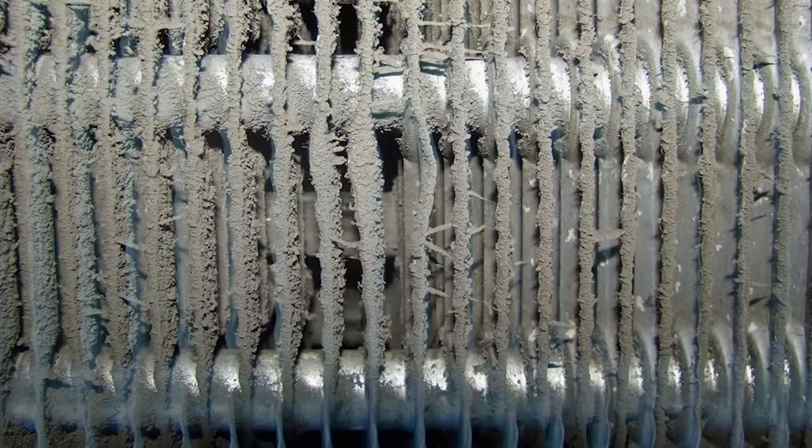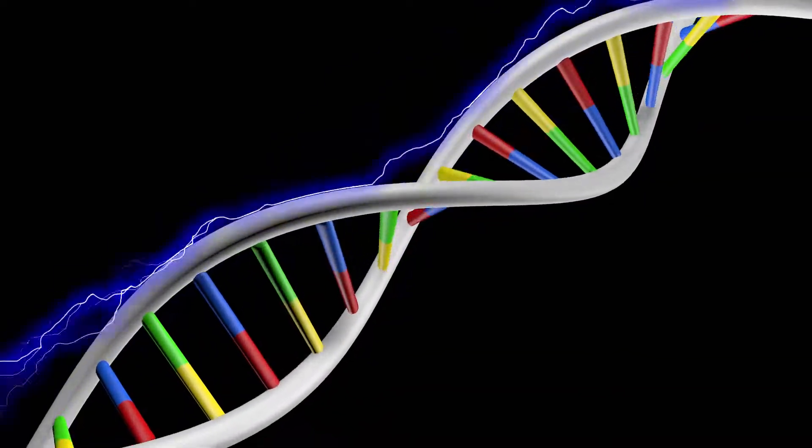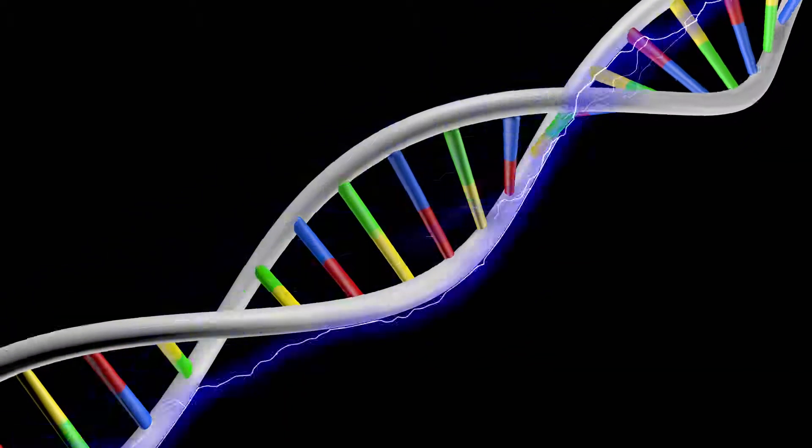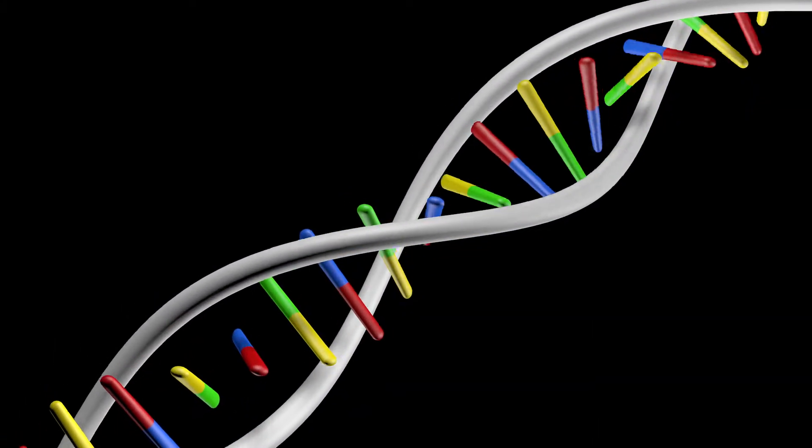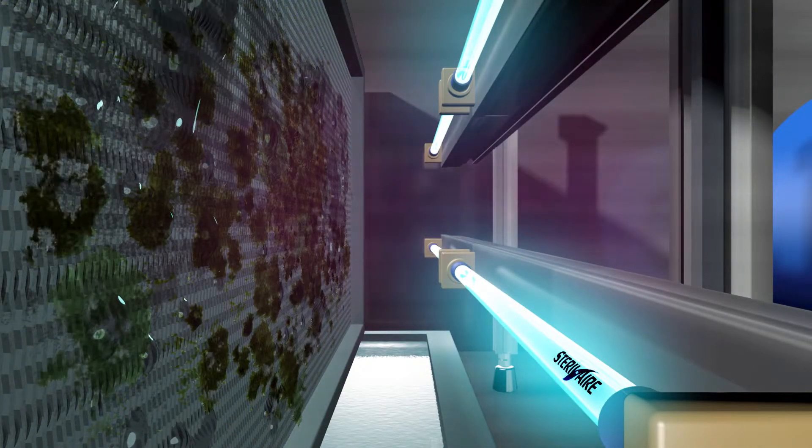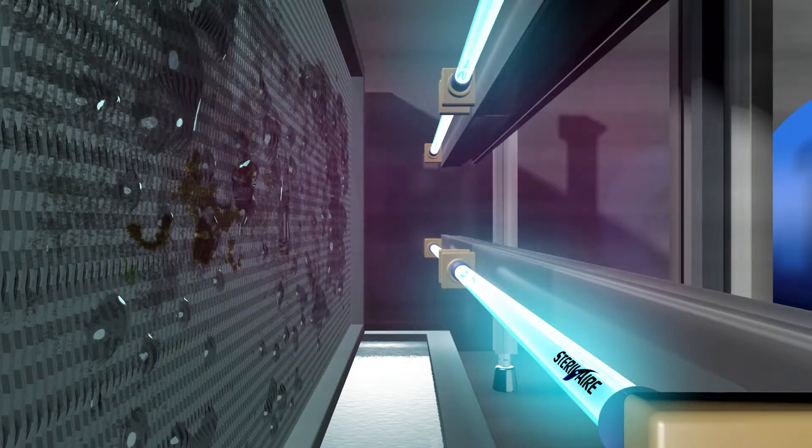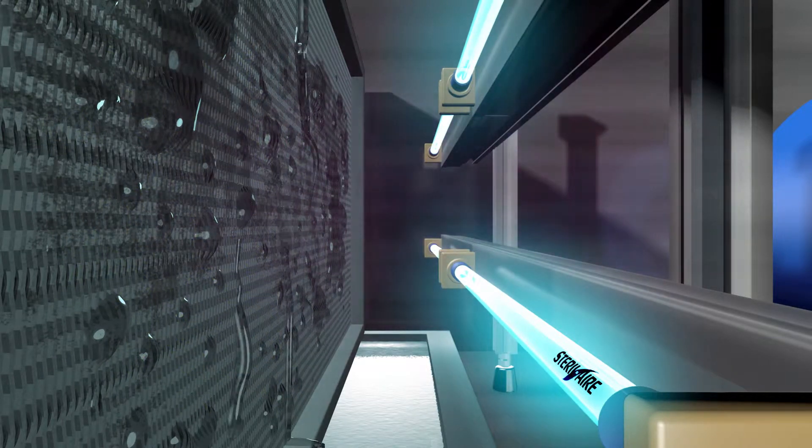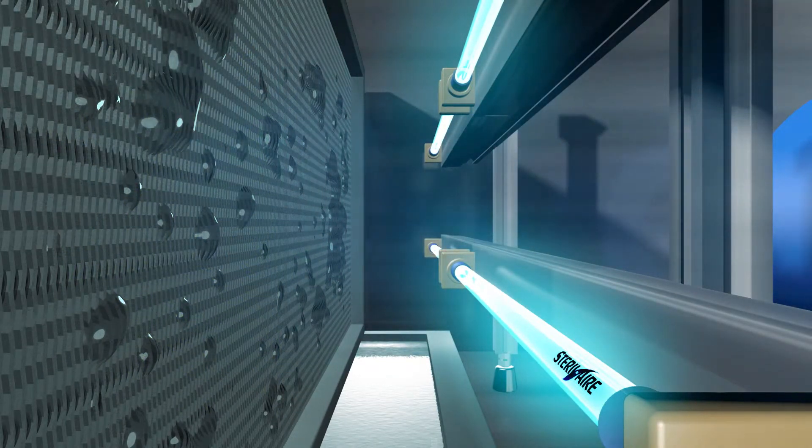Sterile air's emitters continuously clean the coil fins by destroying the DNA inside the microbes. Once the DNA is destroyed, the microbe can neither grow nor duplicate, so it dies. The dead mold falls away with the dirt and is washed by the condensate into the drain pan. Whatever your industry, you can benefit from sterile air.